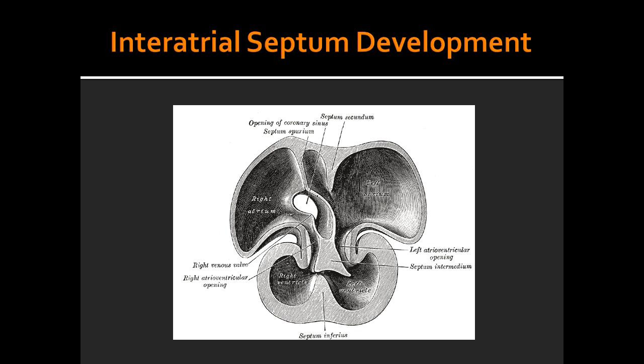What is happening on image 5 of the interatrial septum development? On image 5, you can see that foramen secundum enlarges and the upper part of septum primum degenerates.